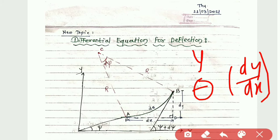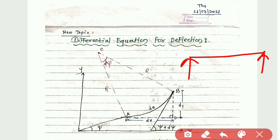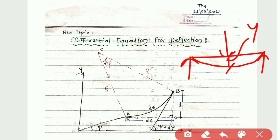Today we are going to start a new topic: the differential equation for deflection. So let us consider a simply supported beam which is subjected to a vertical load, that is a transverse load. After loading, it will bend like this.